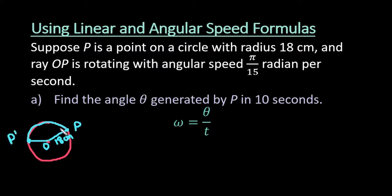So this would be my P prime over here. So we started at this point here and then we rotated through the circle over to here after 10 seconds. So that's what we're trying to find here is we're trying to figure out what is this angle measure of opening and we're going to find it in radians rather than degrees.